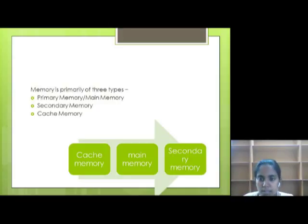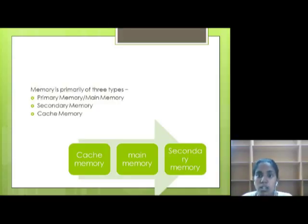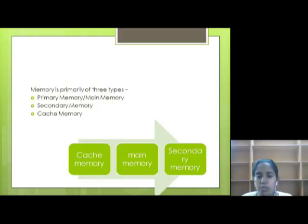Primary memory is also known as main memory. How does the computer work with memory? The process is like if we want to search something from the computer system, when we give a command, the command will be registered into the CPU. The CPU will start searching for the desired command in the cache memory. Then, if it does not find it in the cache memory, it will go to the main memory.